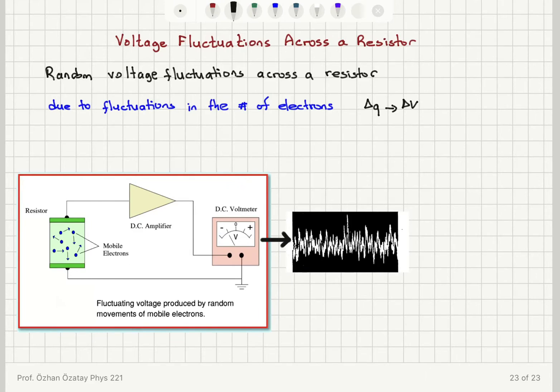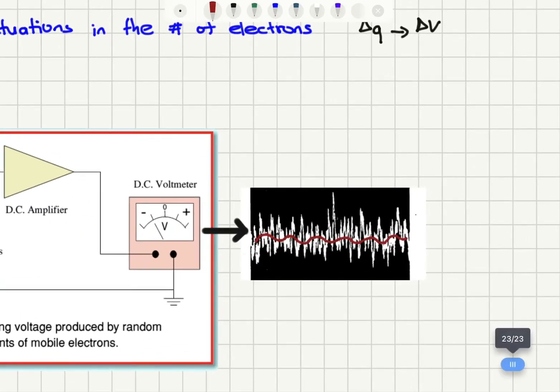So what is the manifestation of this fluctuation? If the signal you're trying to measure is here, you can see that the signal will be hidden behind this fluctuation. So it will be very difficult to detect the signal.